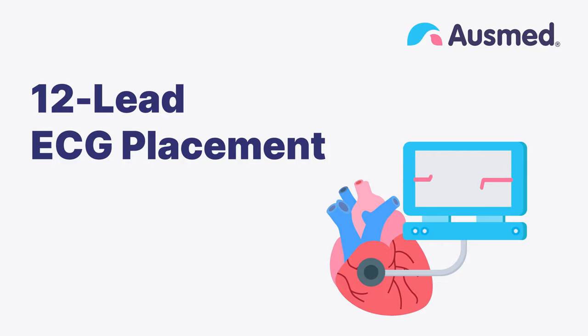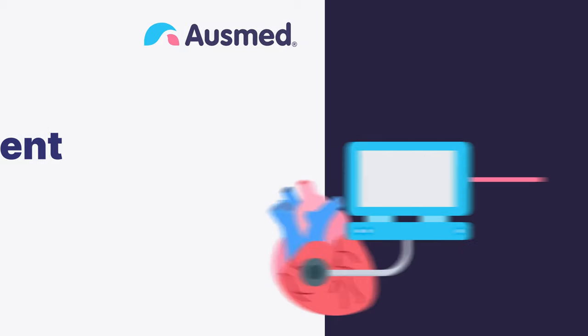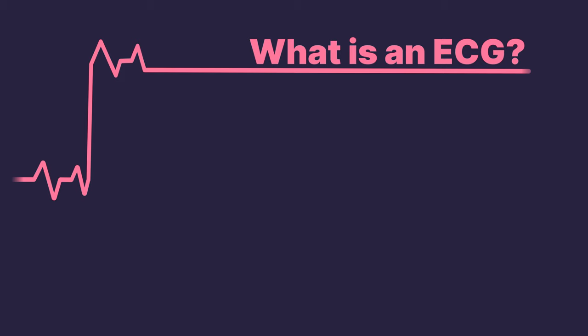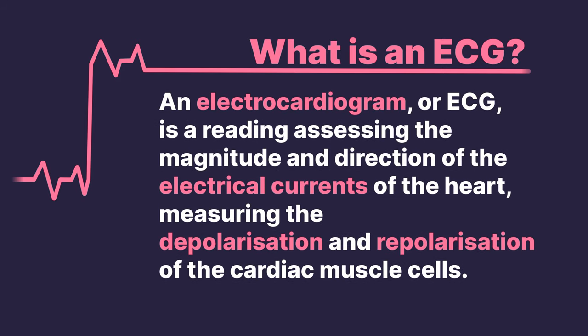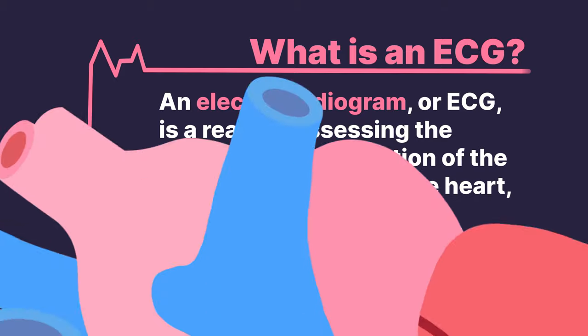12 lead ECG placement. What is an ECG? An electrocardiogram, or ECG, is a reading assessing the magnitude and direction of the electrical currents of the heart, measuring the depolarization and repolarization of the cardiac muscle cells.